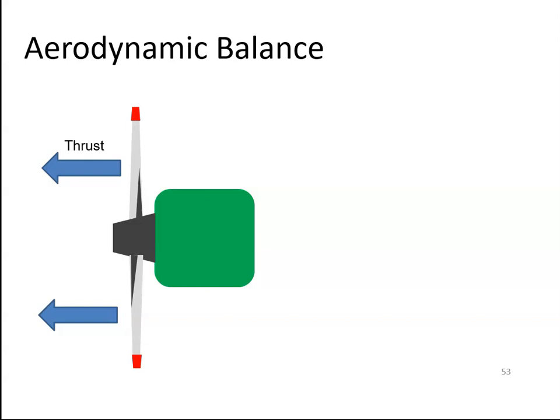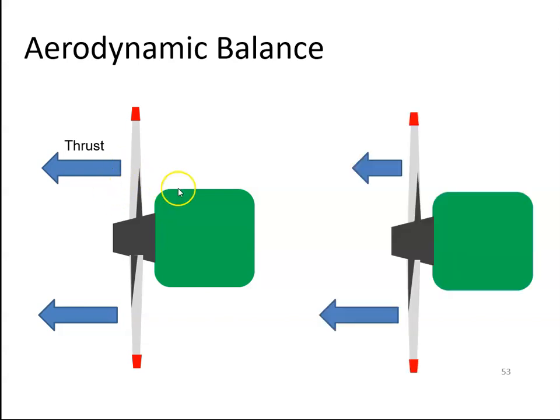So each blade will produce an equal amount of thrust. If we had a different amount of thrust, if this propeller was producing more thrust than this propeller, then the shaft would want to move up in this direction. And then when the blade comes around to this position, it would want to go in this direction. So the shaft would be going up and down and that vibration then would carry on through to the aircraft.